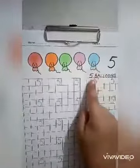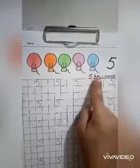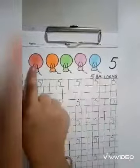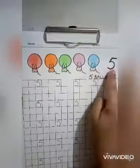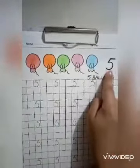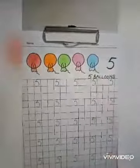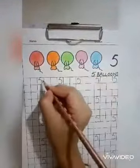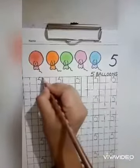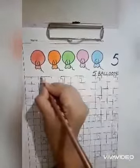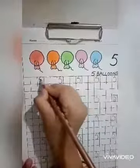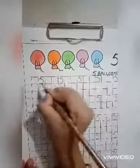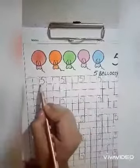How many balloons are there? There are 5 balloons. First of all, babies, you will do coloring in these balloons and then you will do tracing of number 5. First of all, hold the pencil tightly and make a small sleeping line like this. Then make a small slanting line and half a round touching the bottom line of the box like this.